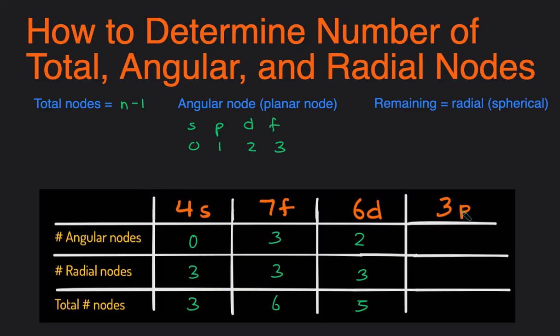And lastly, 3P, the total number of nodes would be 3 minus 1, which is 2. P has 1 angular node, that means it's going to have 1 radial node.